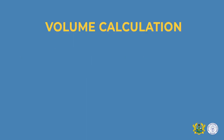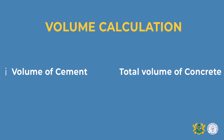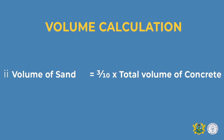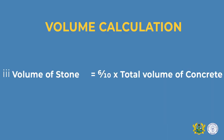Now let us look at how to calculate the volume of concrete. Starting with cement: to calculate the volume of cement, you must know your total ratio and the total volume of the concrete. For cement, we have 1 over 10 — one represents the cement ratio and 10 the total ratio — times the total volume of concrete. For sand, we divide 3 by 10 and multiply by the total volume. For stone, we divide 6 by the total ratio and multiply by the total volume of concrete calculated earlier.